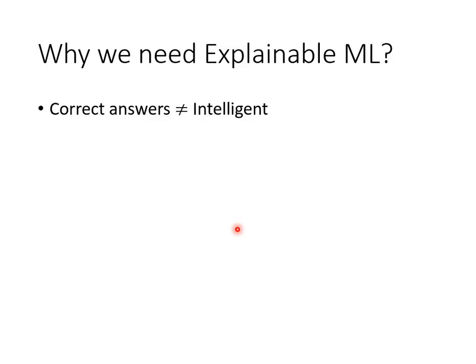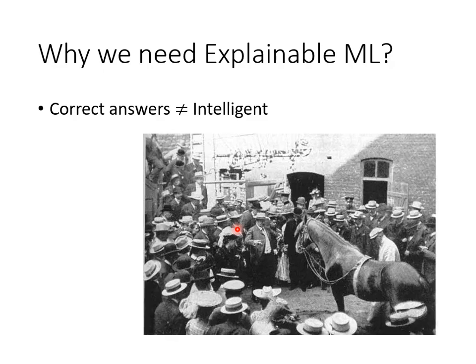Before introducing the technology, we need to talk about why explainable machine learning is an important issue. The essential reason is that even if the machine can get the correct answer today, it does not mean it must be very smart. As an example, there used to be a horse that was very smart, so everyone called it the God Horse Hans. It could do math problems — for example, you asked what the root of 9 was. It would stomp the floor with its hooves. If the answer was 3, it knocked 3 times, then stopped, which meant it got the correct answer.